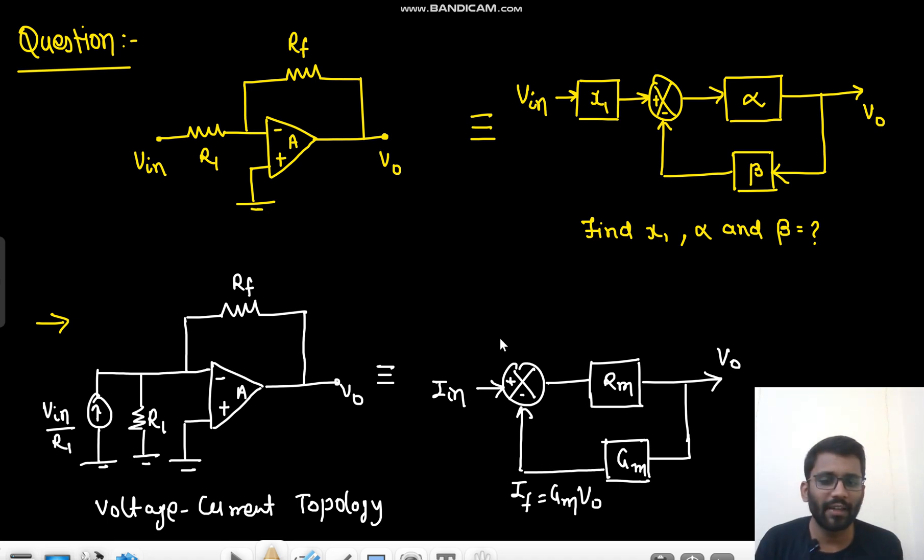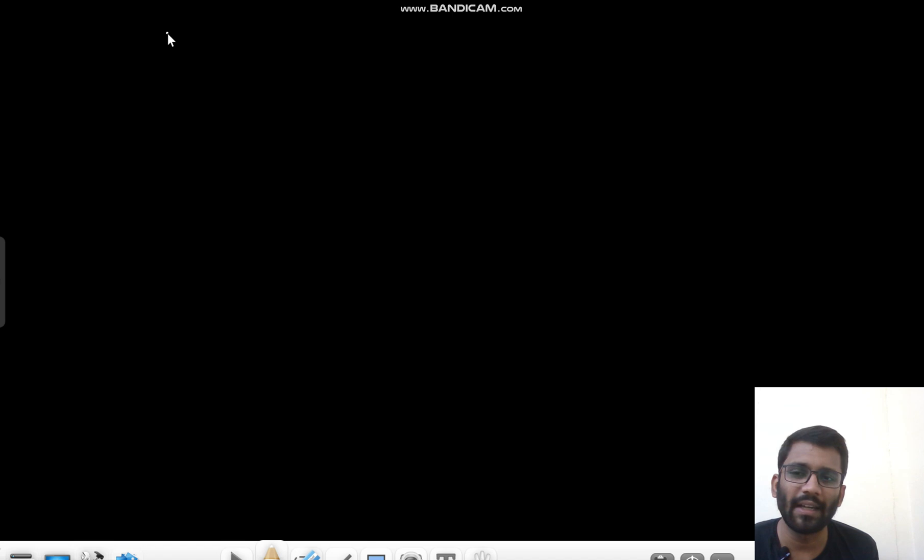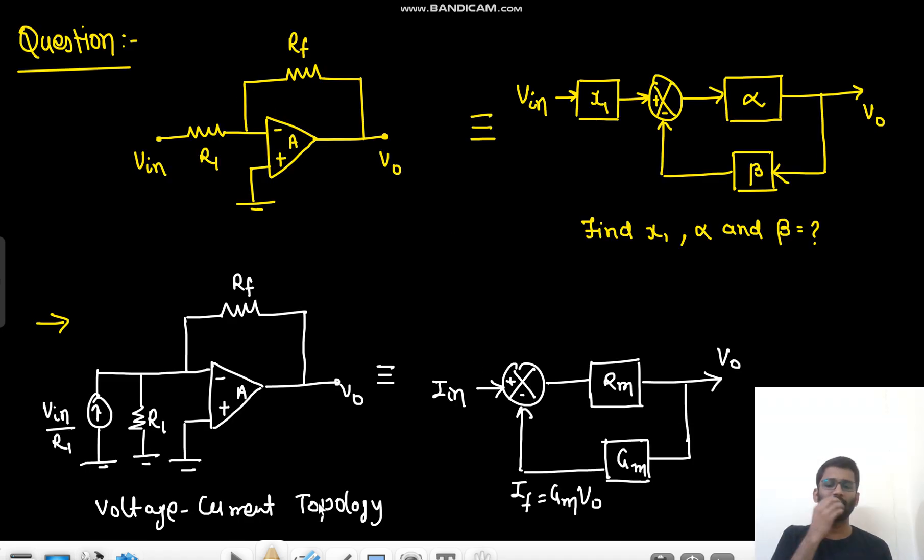So if you compare it with the previous one, you can see that what is X1? What is X1? 1 by R1. This is the source. So X1 is 1 by R1. So basically I in, your I in is first thing, your I in here is V in by R1. So you can say that your X1 is 1 by R1. This is X1. Now talk about the feedback.